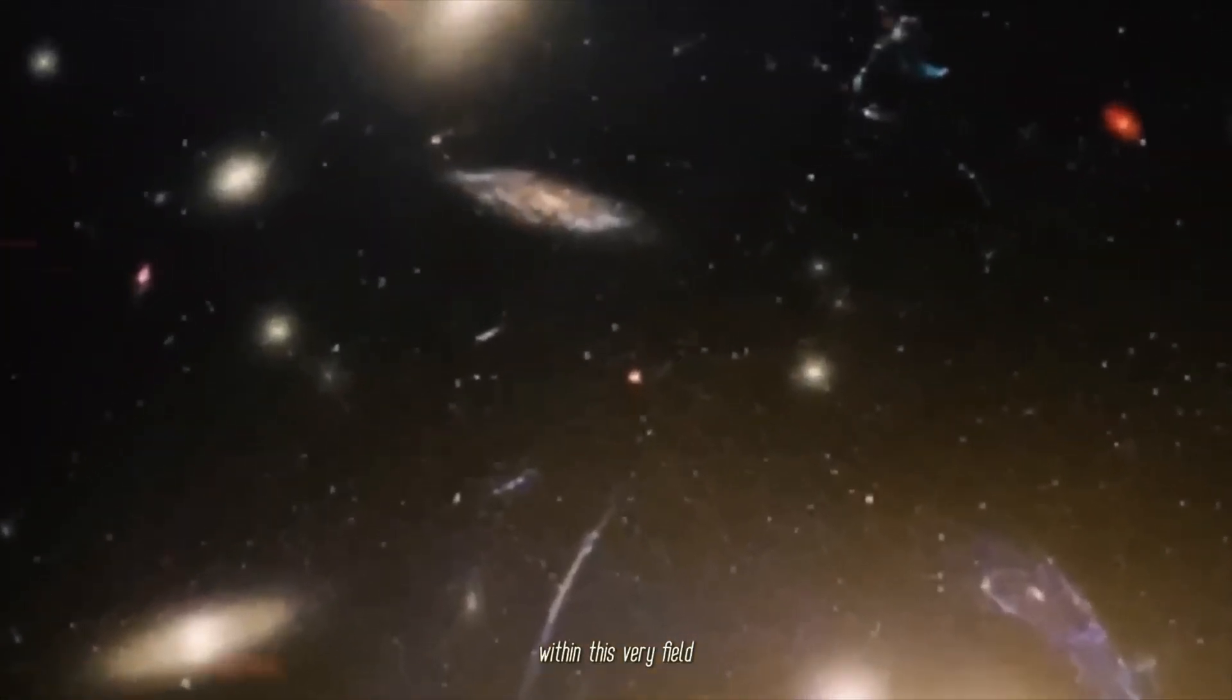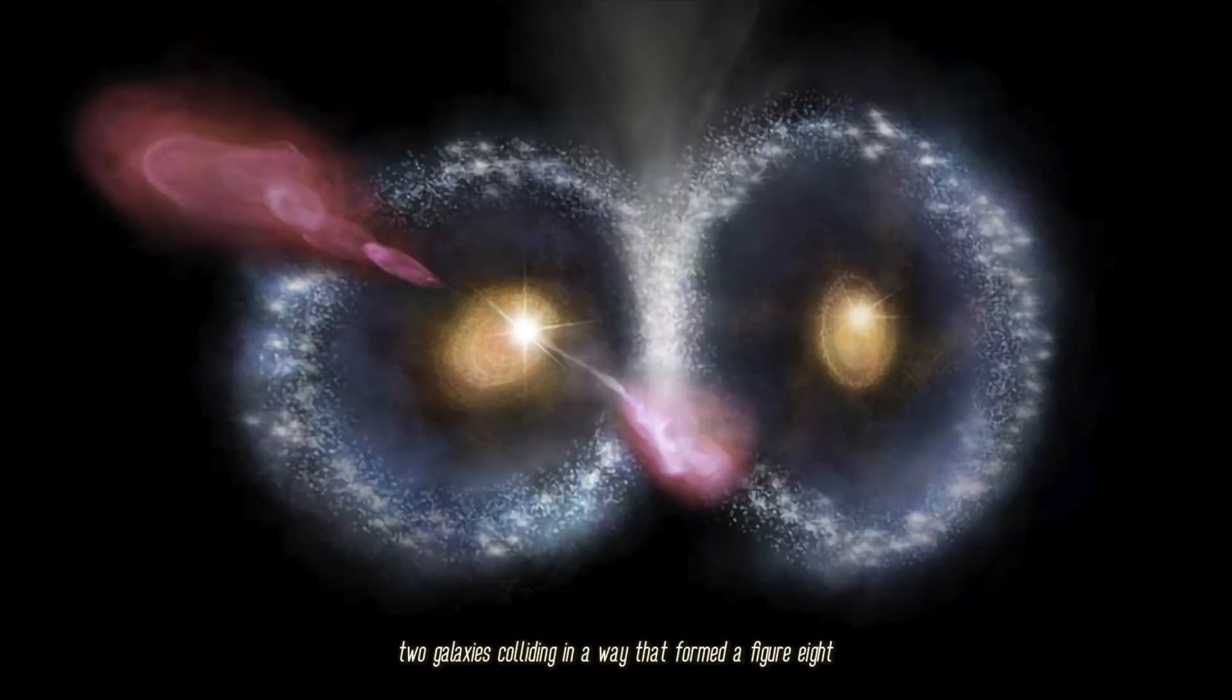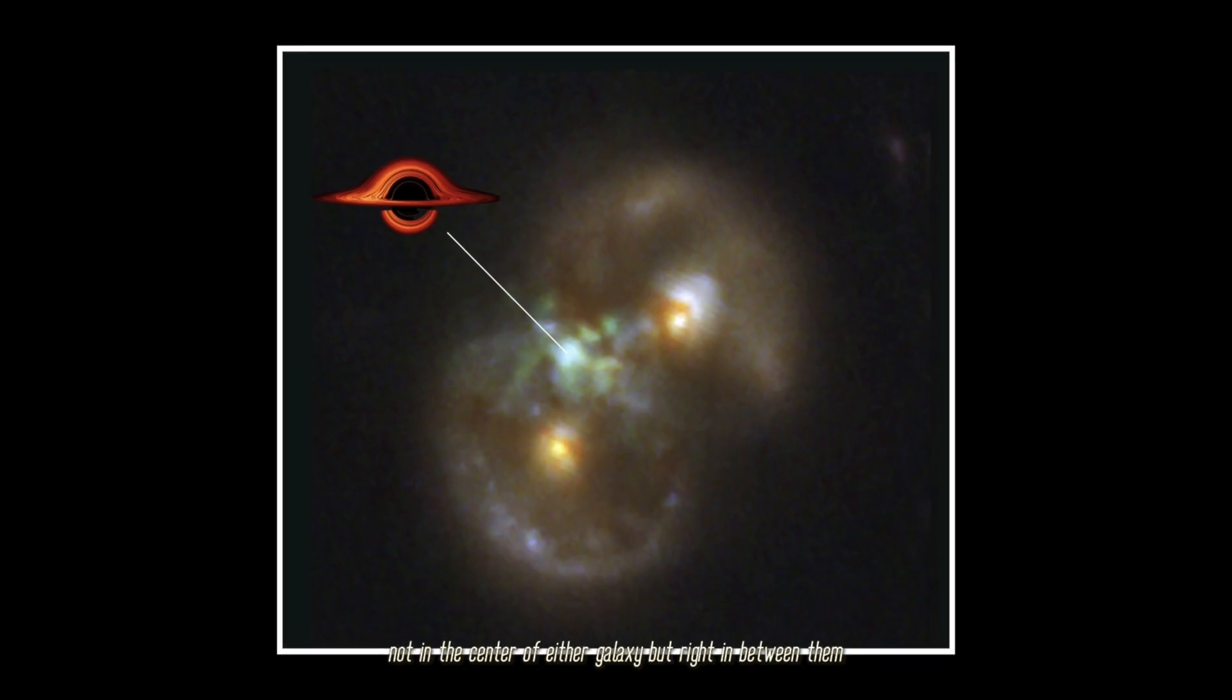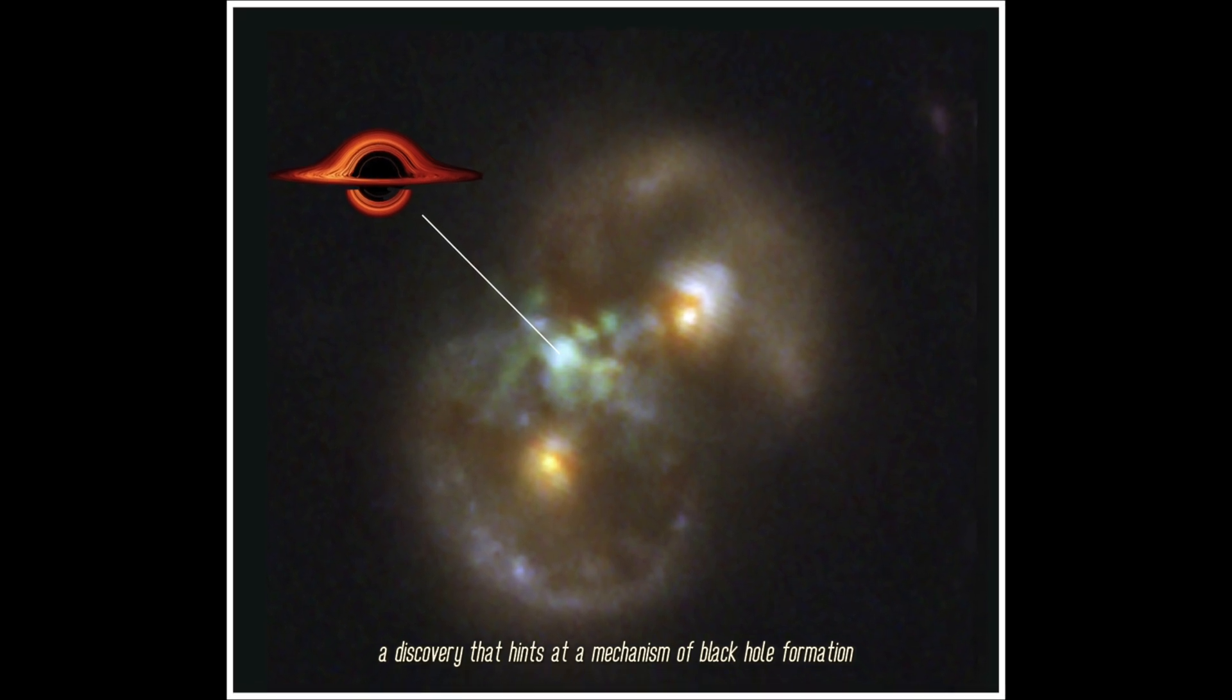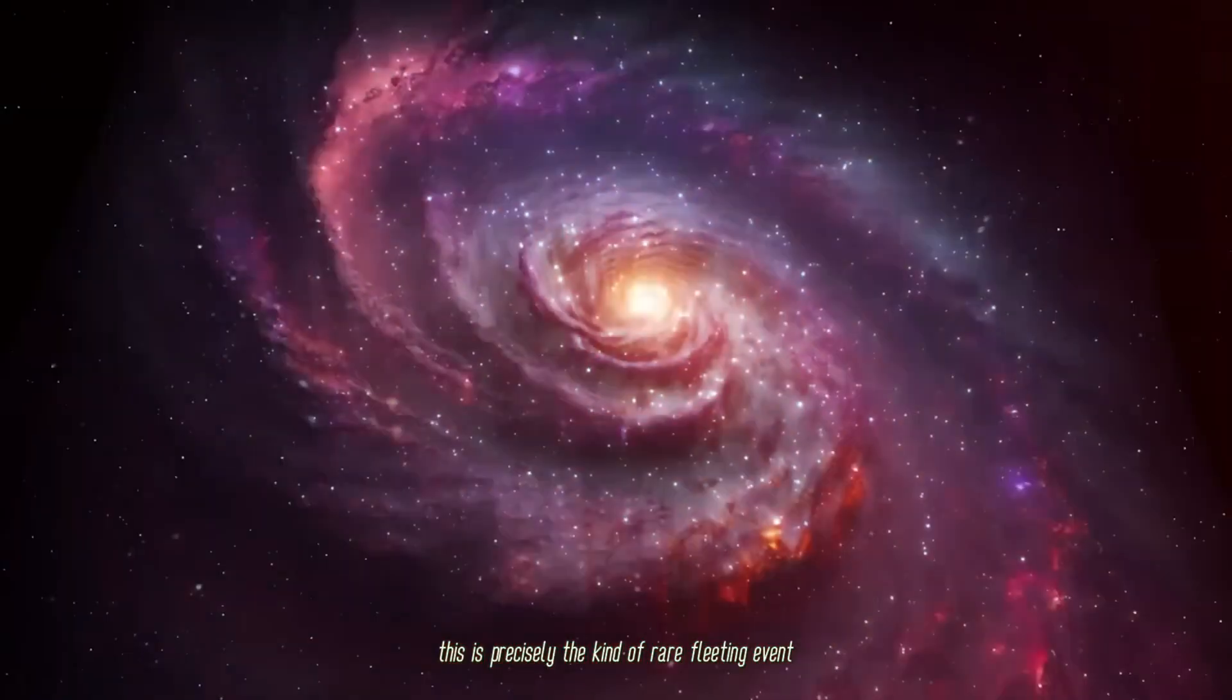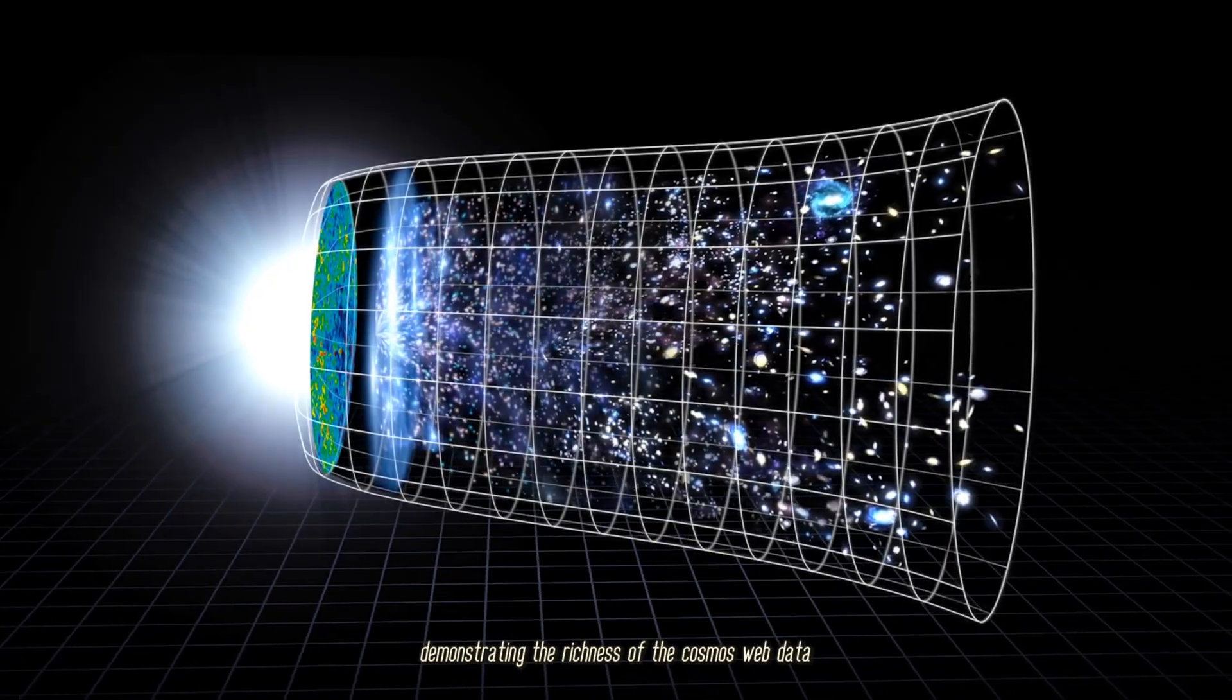Within this very field, astronomers found a remarkable object nicknamed the Infinity Galaxy—two galaxies colliding in a way that formed a figure eight. Extraordinarily, a supermassive black hole appears to be forming not in the center of either galaxy, but right in between them. A discovery that hints at a mechanism of black hole formation never witnessed before. This is precisely the kind of rare fleeting event that can only be found when surveying a vast volume of space.